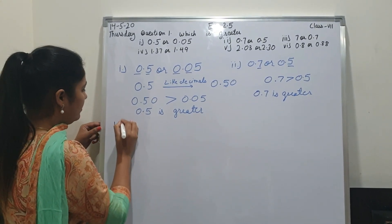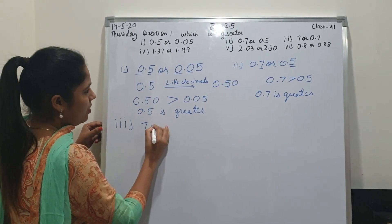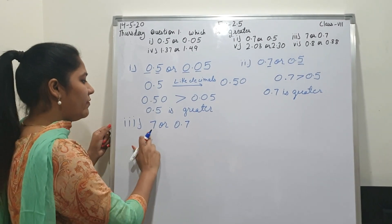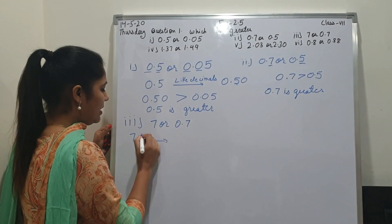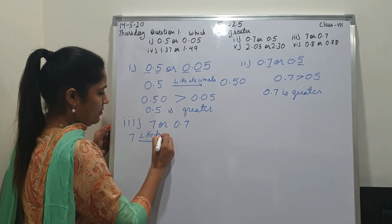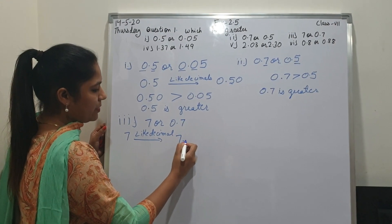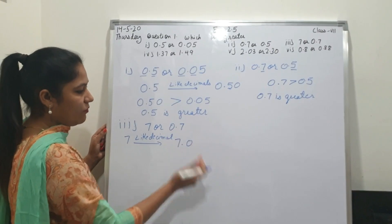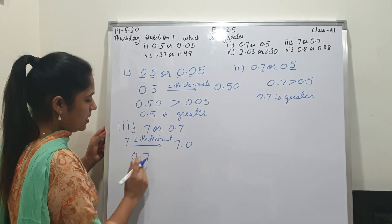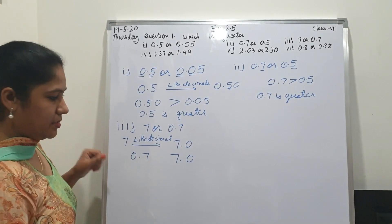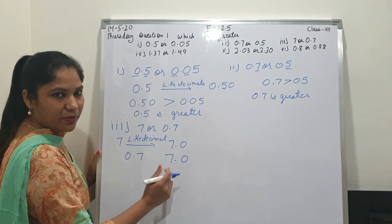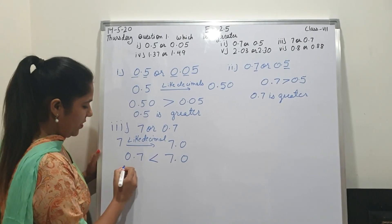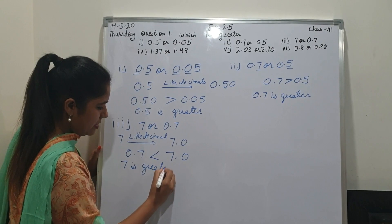Third part, student: 7 or 0.7. Now see, this is not a like decimal. First we will convert 7 into like decimal. So 7 has no decimal — we can write 7.0. Now after the point, 1 decimal place. So 0.7 and 7.0 — which one is greater? From left hand side: 0 and 7. From 0 and 7, which one is greater? 7. So we will write 7 is greater.